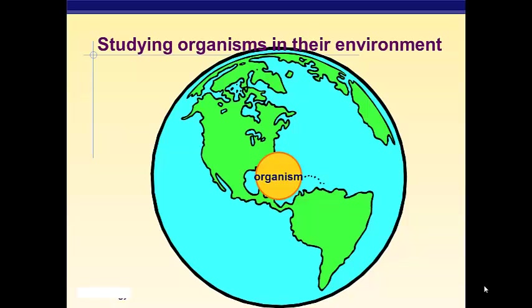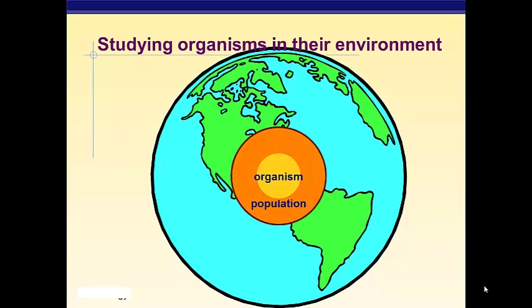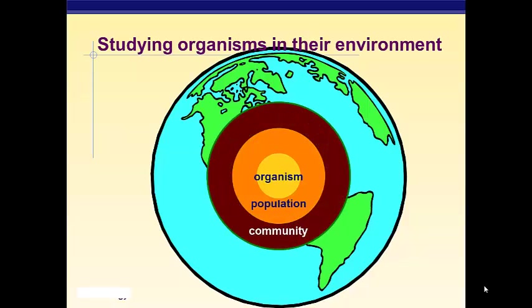If you start with an organism — one single individual organism — the next level up is a population, which is all of the organisms of a given species living in an area. Next, you get to community, which is all of the living things living in an area. So not only all of the turtles living in a pond, but also all of the fish, birds, aquatic insects, and plants that live in that pond.